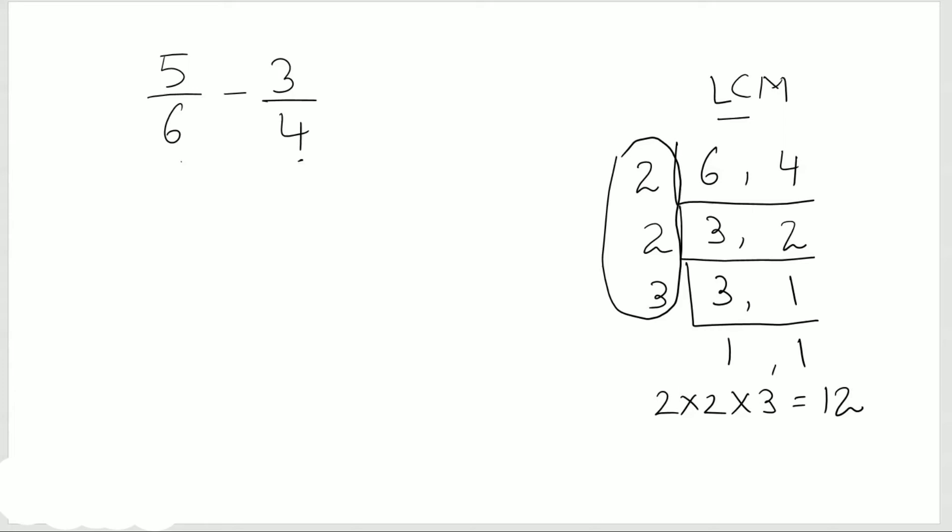Once I got the LCM, I need to change my denominator to get 12. So for the first fraction, it's 6. 6 times 2 is 12. So I multiply the denominator by 2, so I have to do the same thing with the numerator.